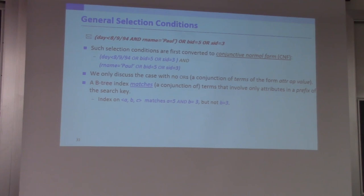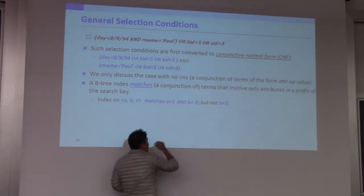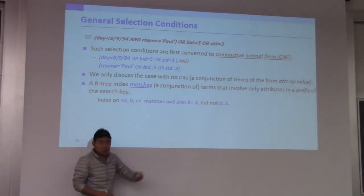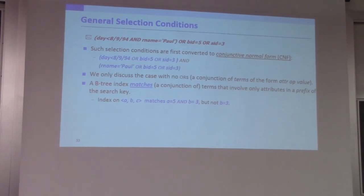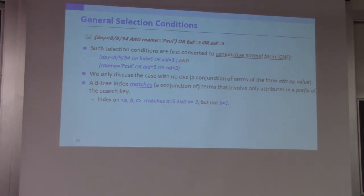Given a conjunctive normal form such as A equal to 5 AND B equal to 3, we claim this index matches this conjunctive normal form — or equivalently, this conjunctive normal form matches this particular index. What that means is you can potentially use this index to speed up the processing of this particular query. This term — this conjunctive normal form — is a prefix of your search key. When that happens, you can use this index to answer this query.